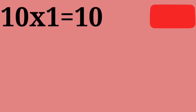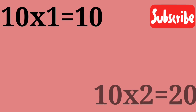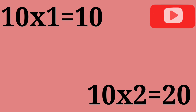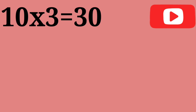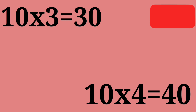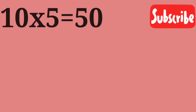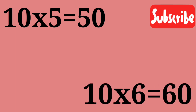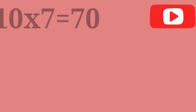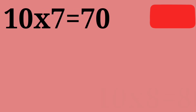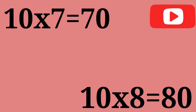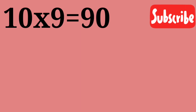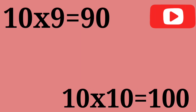10 ones are 10. 10 twos are 20. 10 threes are 30. 10 fours are 40. 10 fives are 50. 10 sixes are 60. 10 sevens are 70. 10 eights are 80. 10 nines are 90. 10 tens are 100.